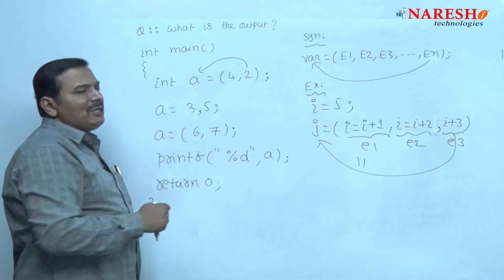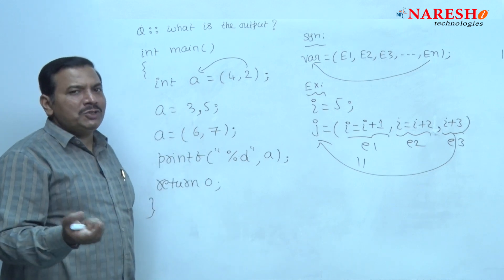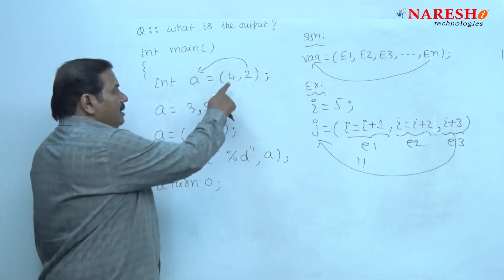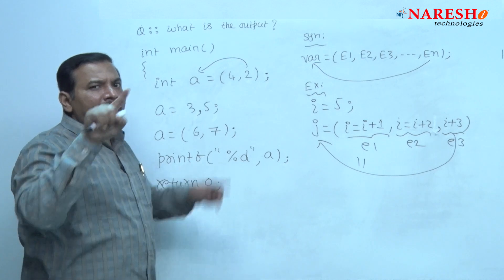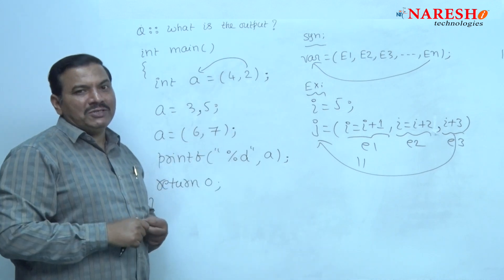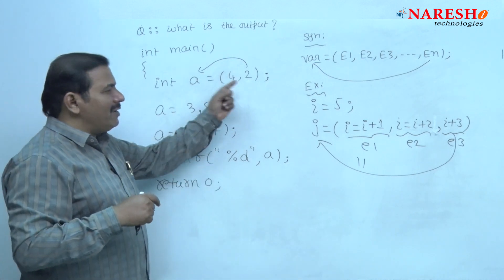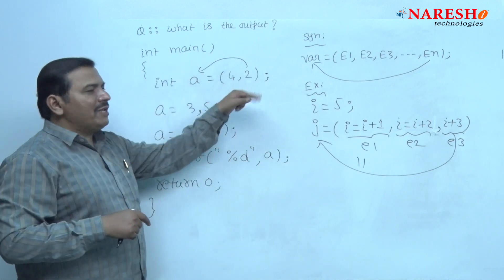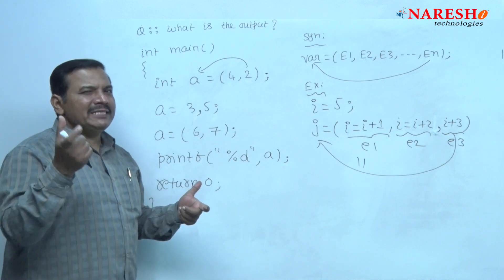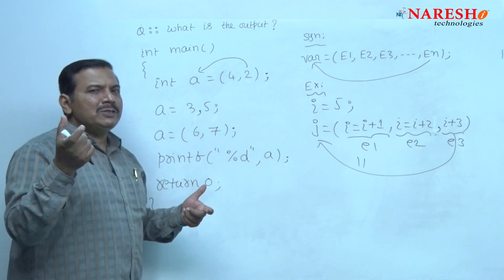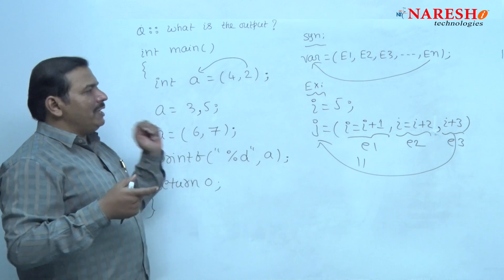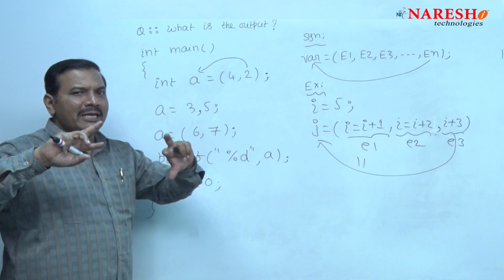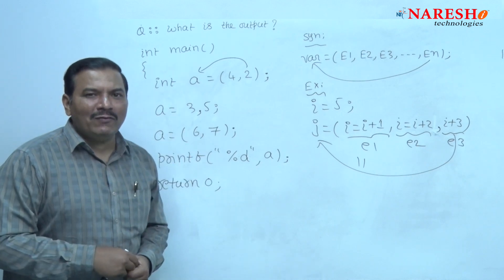So, the value on the right side of the assignment operator is 3, and that is assigned to a. Whereas here, the expressions separated with comma are enclosed within parentheses. Hence, the comma operator evaluates first and then the assignment operator. After evaluating the comma, the final result is 2, which is assigned to a — because parentheses invert the precedence of operators.